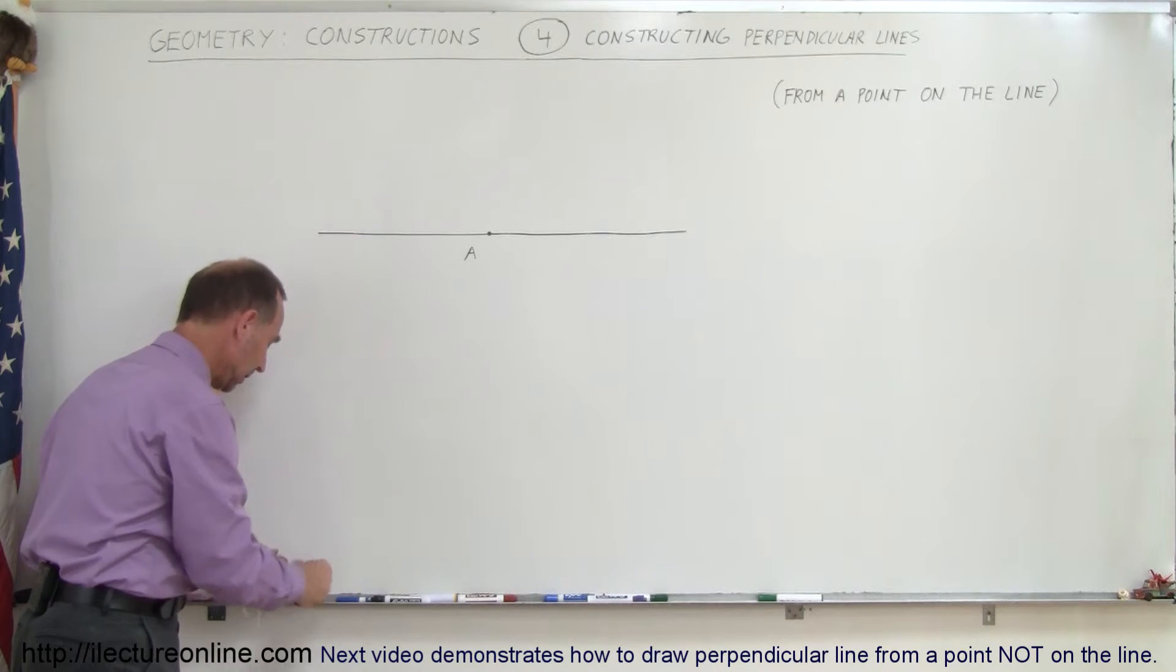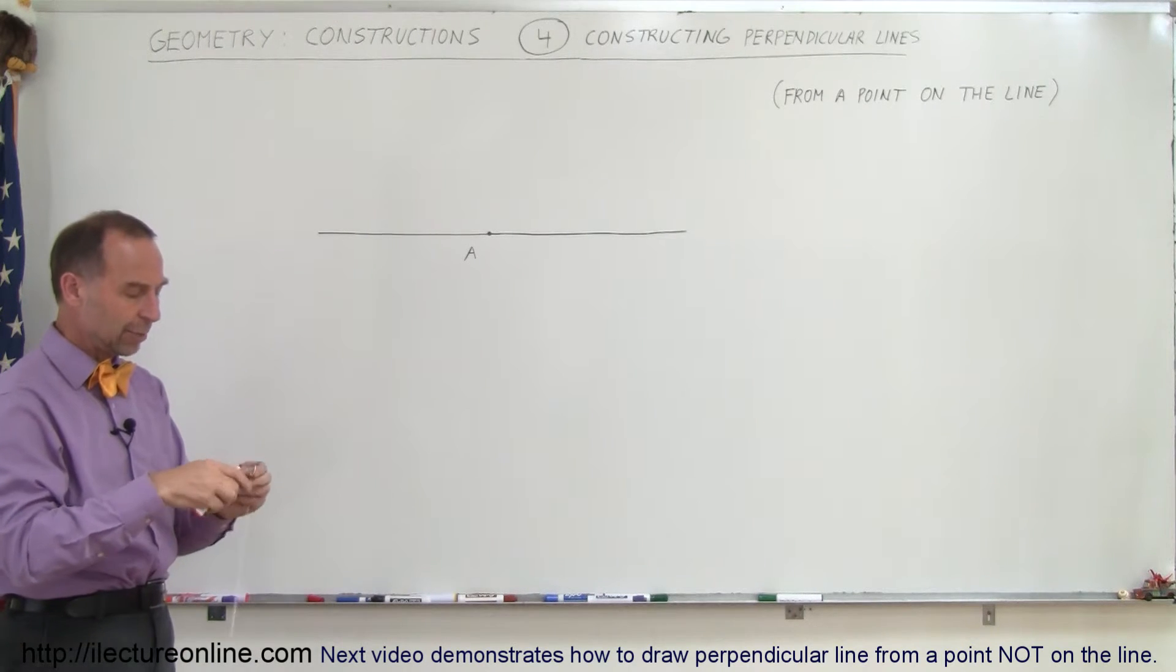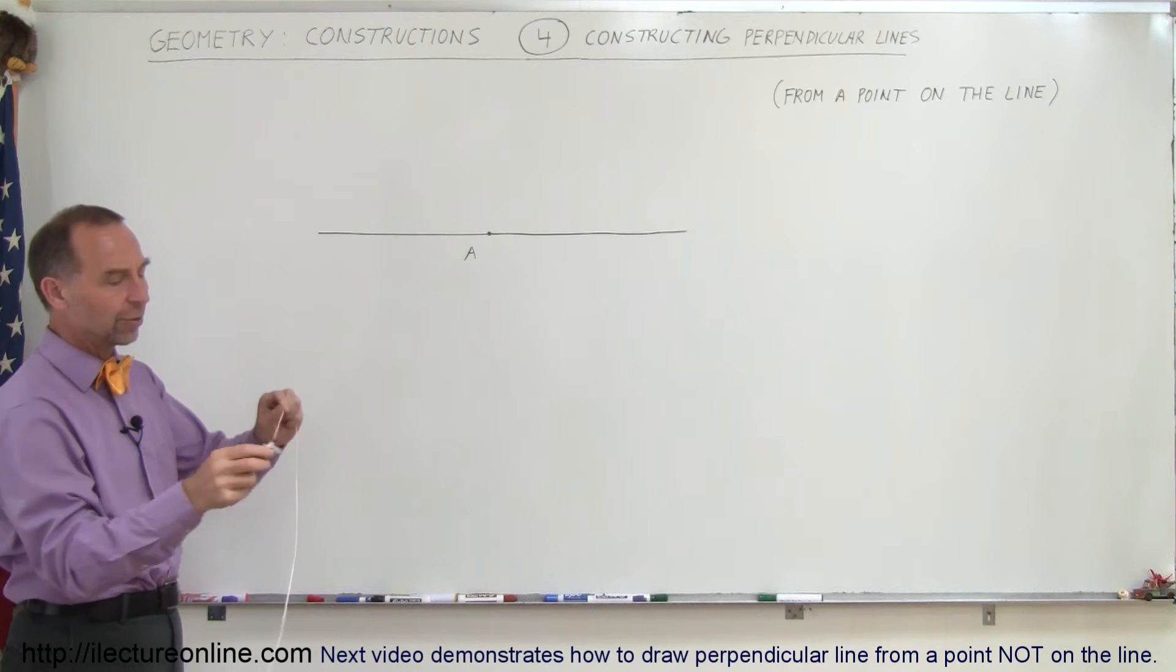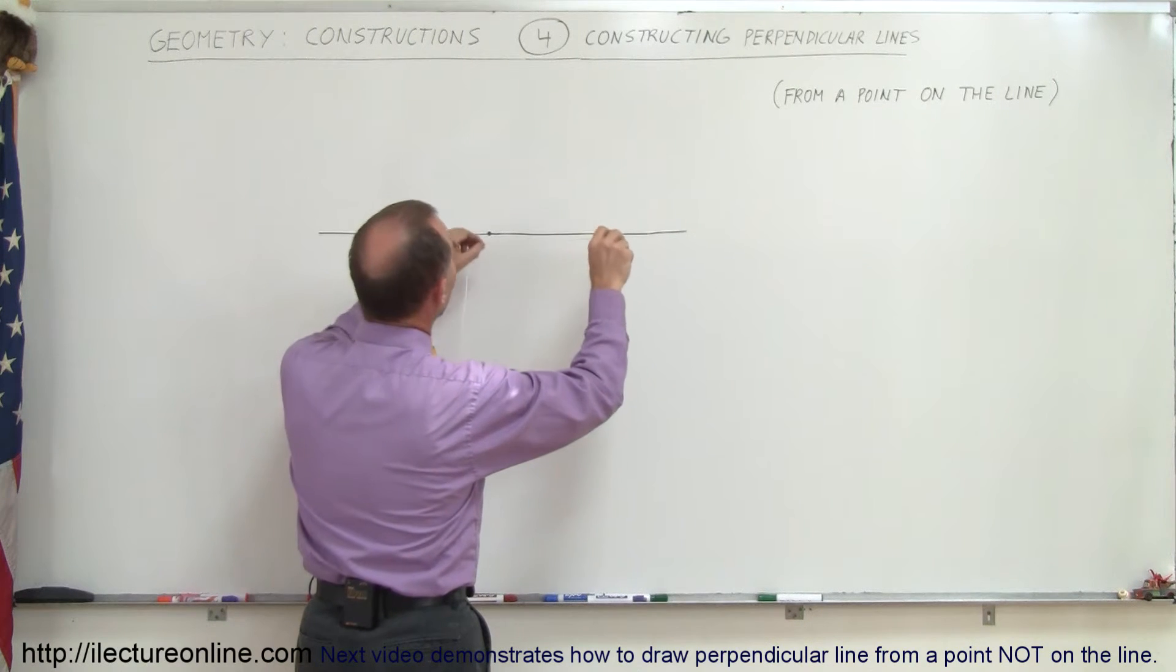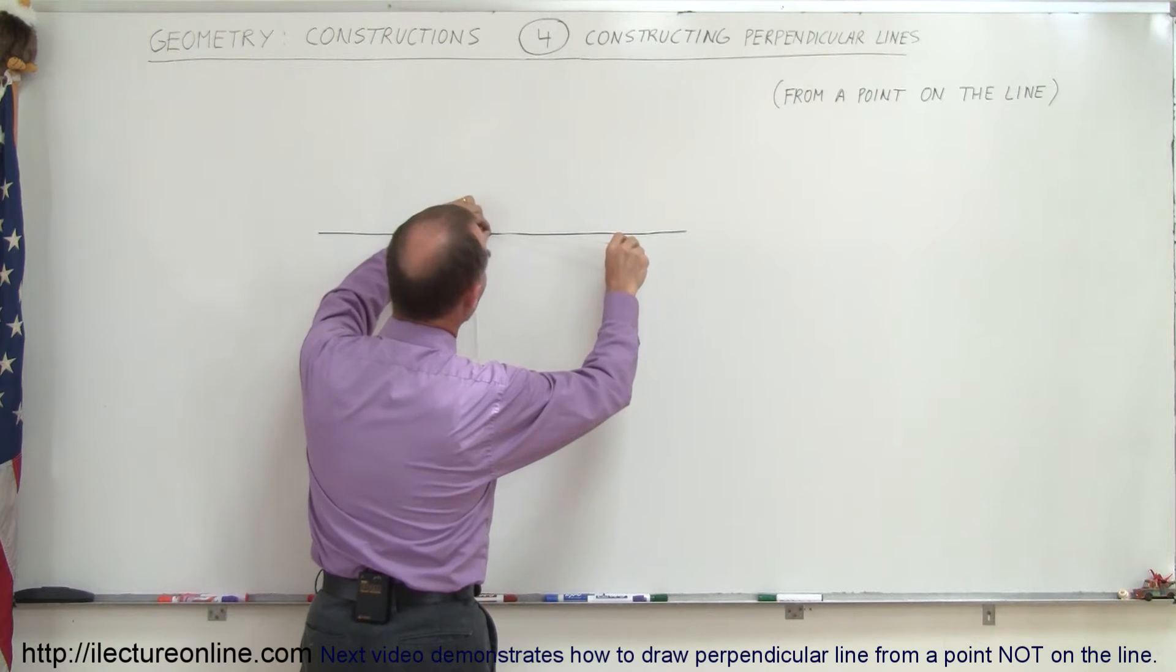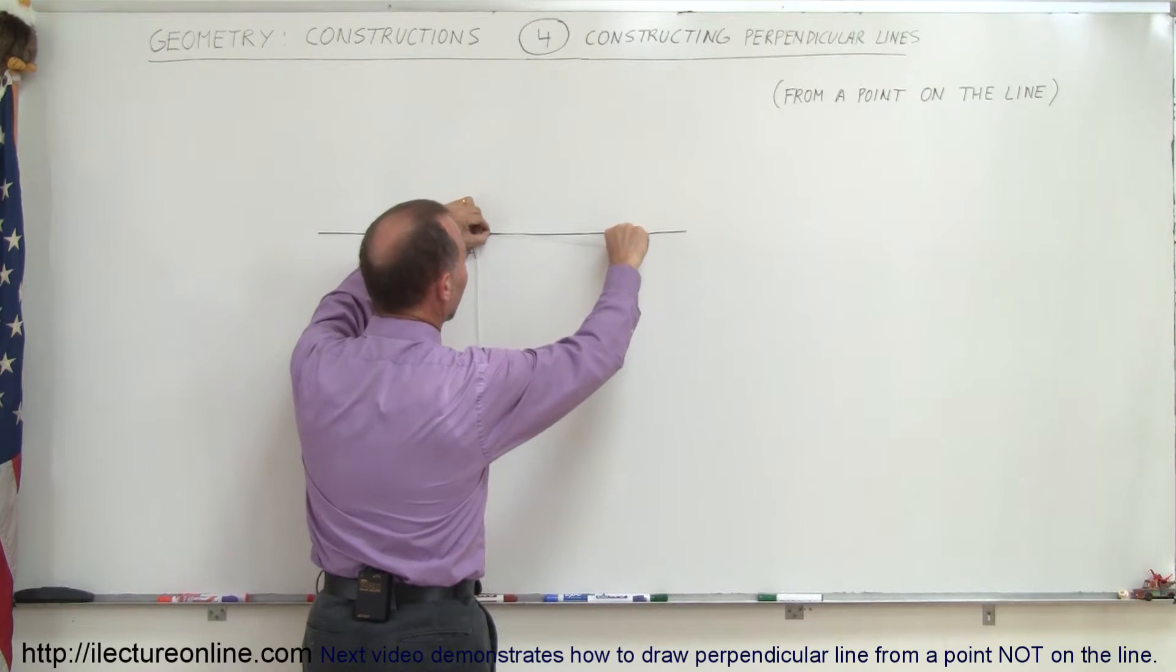We need a compass. Here my little string will take the place of a compass. Put your pen right through the loop, then hold your end of the compass on point A, and draw a little line right there.